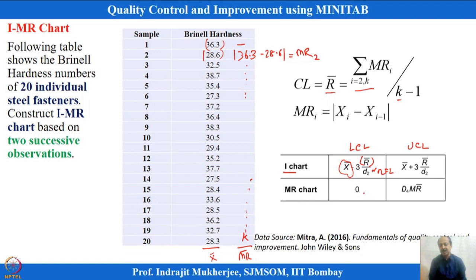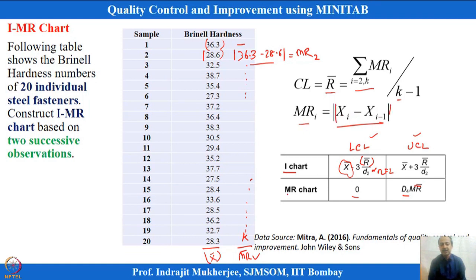For the moving range chart, the limits are d3·r-bar and d4·r-bar, similar to the X-bar R chart. Since d3 = 0 for n = 2, the lower control limit becomes 0, and the upper limit is d4·mr-bar. The overall average x-bar of individual observations gives the center line, and similarly the moving range average gives the center line for the MR chart. The moving range is expressed as MRi = |xi − x(i−1)|.